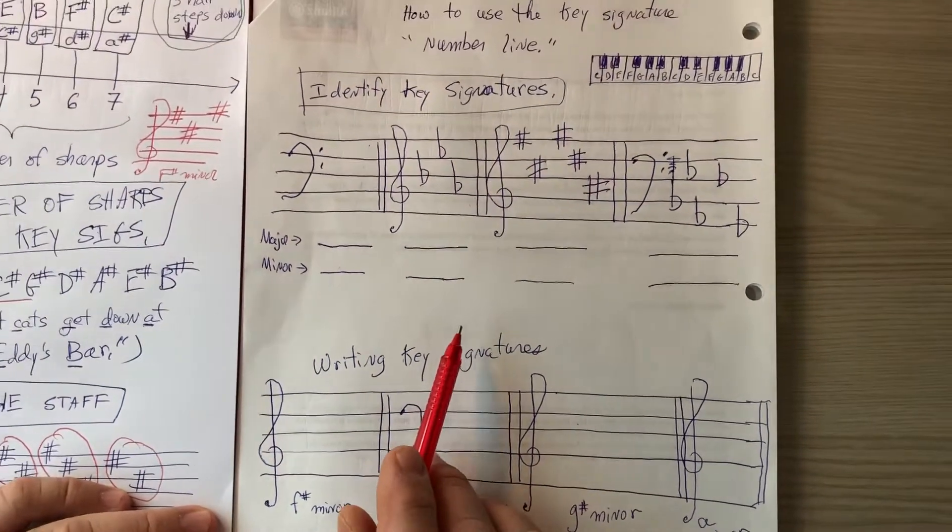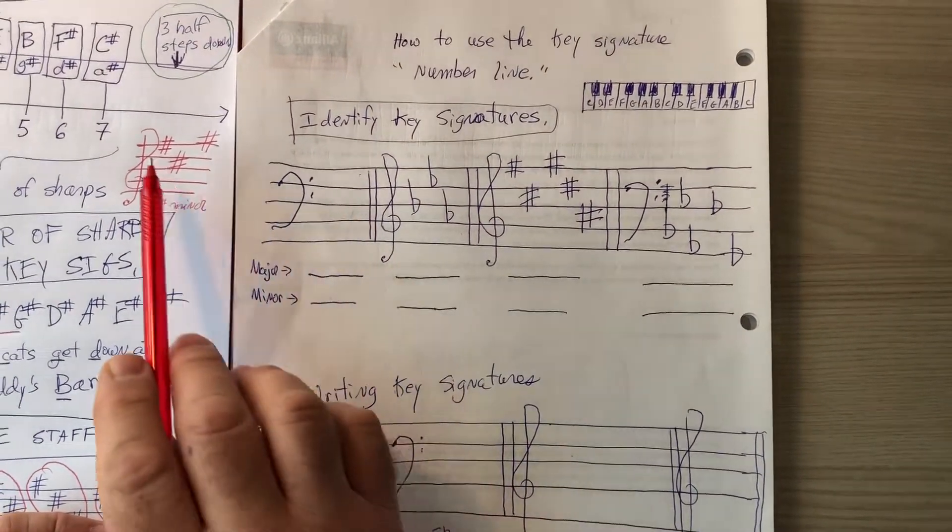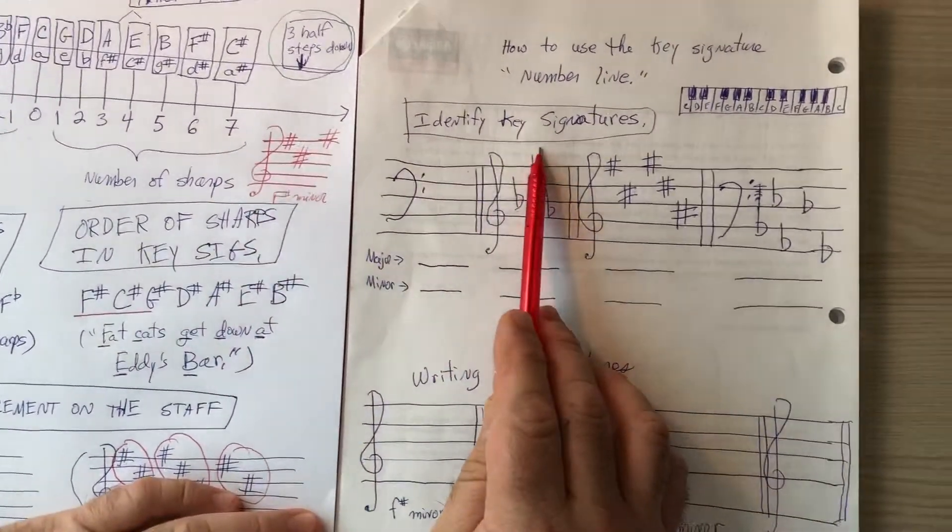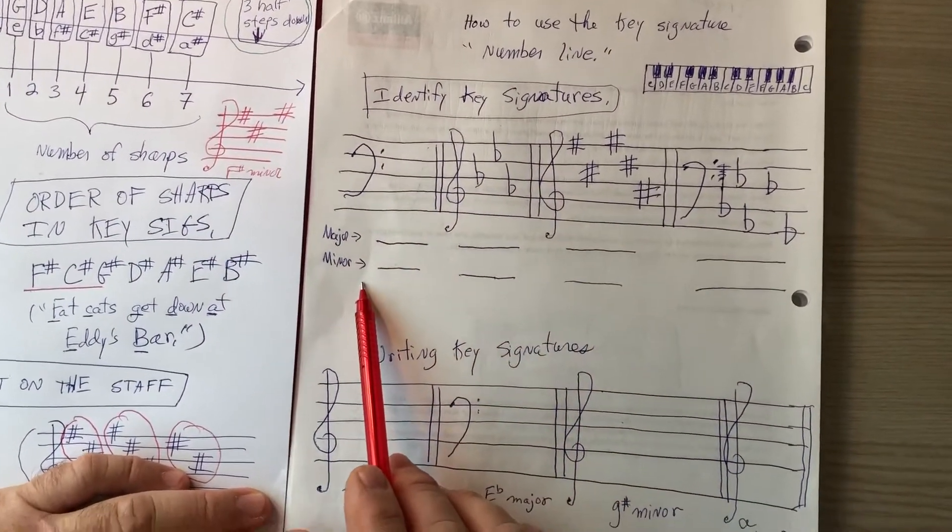Hi, this second video is on how to use the chart that we learned to write in the first video to identify major and minor key signatures.